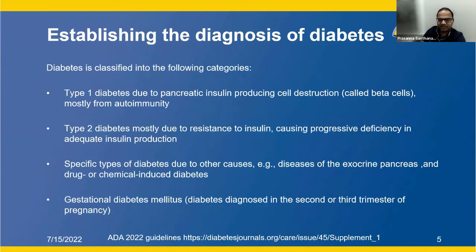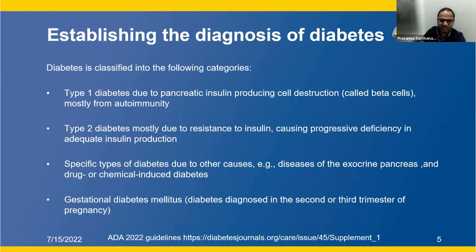Establishing the diagnosis of diabetes: diabetes is classified into two broad categories. Type 1 diabetes is due to pancreatic insulin-producing cell destruction called beta cells. The pancreas has alpha cells and beta cells; the beta cells produce insulin, but in type 1, those cells are destroyed due to autoimmunity.